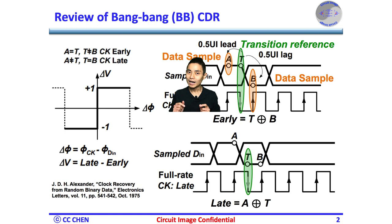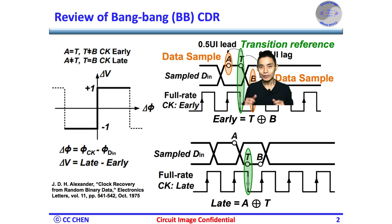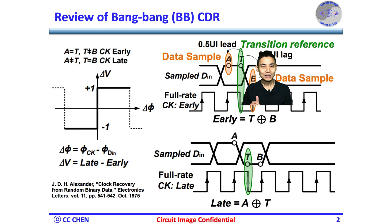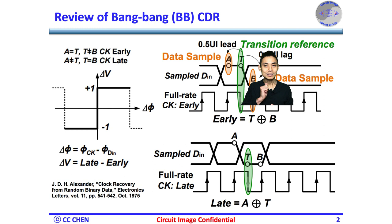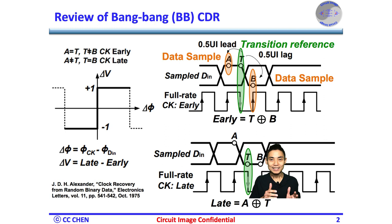Since we need to know if the clock is early or late in a simple way, we must make use of the transition sample T as a baseline criterion. From the waveform, the transition sample T embeds the clock transition information. We should have one-half UI sample lead and lag the transition sample T, called A and B data samples. If the clock phase is earlier, then both delta sample A and transition sample T would have the same sign but different from delta sample B.